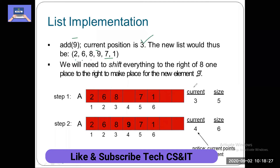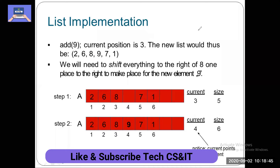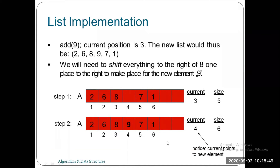The first step: current was 3 and size was 5 when we have 9 added. After the add, the current pointer is 4 and size is 6. There is no technical issue — a new element is added, size goes from 5 to 6, and the current pointer goes from 3 to 4.